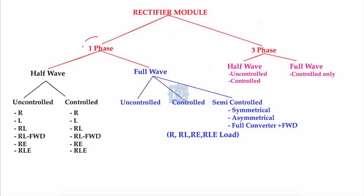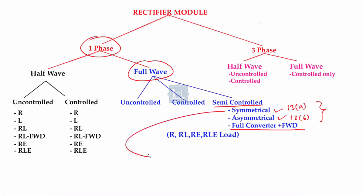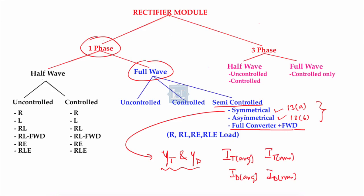In the previous lectures, we covered single-phase full-wave semi-controlled asymmetrical configuration in lecture 13b and symmetrical configuration in lecture 13a. Now in this lecture, we will start the full converter plus freewheeling diode, also known as semi-controlled. In both lectures 13a and 13b, we found the conduction angle of the thyristor and diode, and then IT_average, IT_rms, ID_average, and ID_rms. In the symmetrical configuration the conduction angles are equal, while in asymmetrical they are not equal.